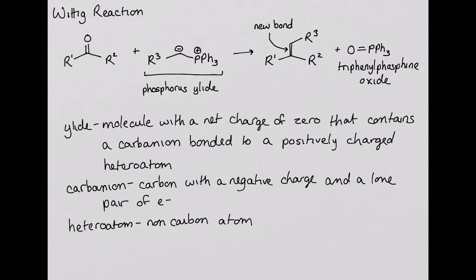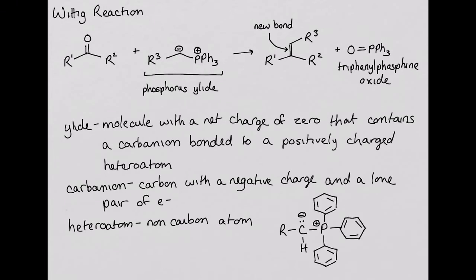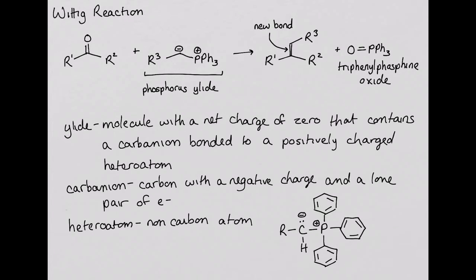Let's take a closer look at the nucleophilic carbon atom in the phosphorus ilid. Notice that this carbon atom has a lone pair of electrons and a negative charge, in addition to three bonds, one of which is to the positively charged phosphorus.